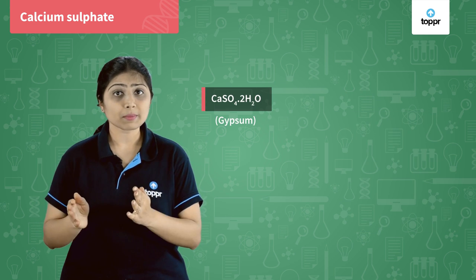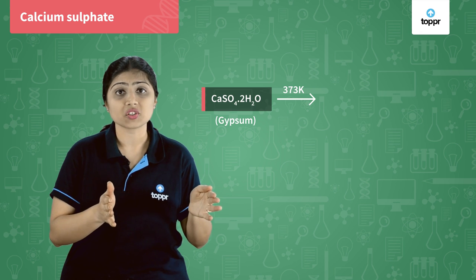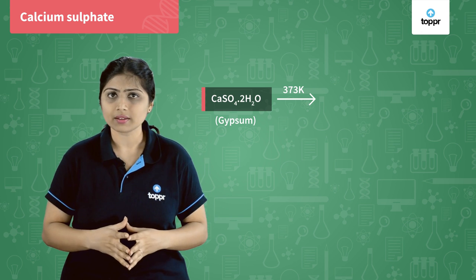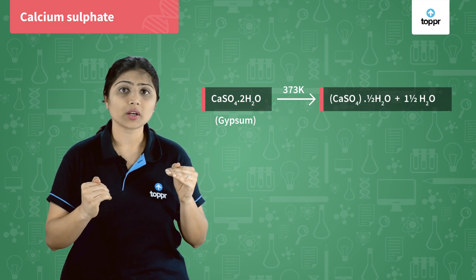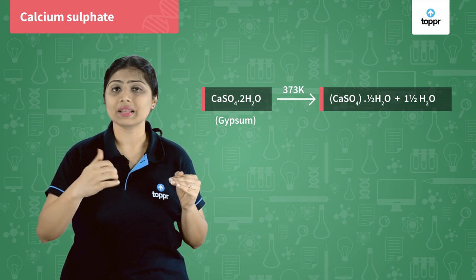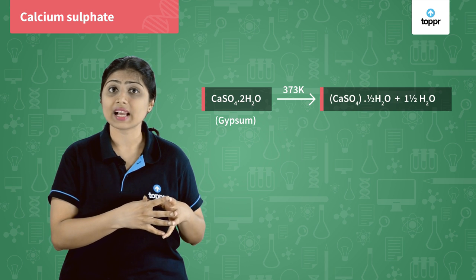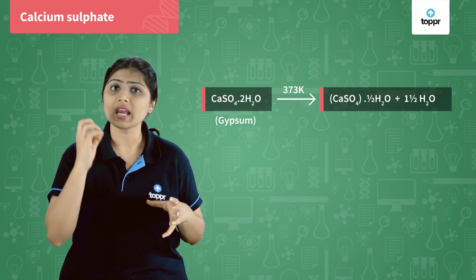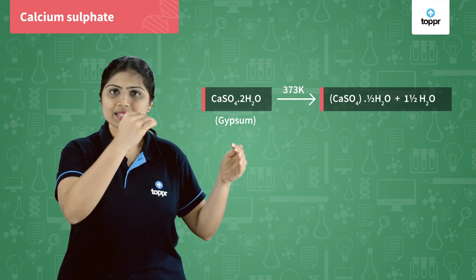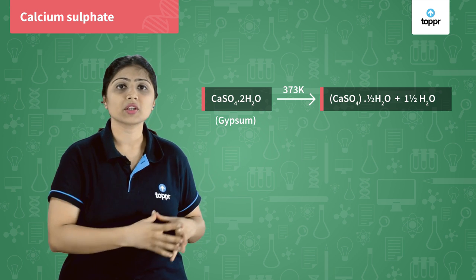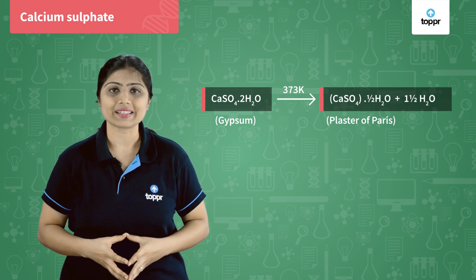When gypsum is heated at 100 degrees Celsius, that is 373 Kelvin, one and a half water molecules from it are evaporated, and what is left behind in calcium sulphate is only half a water molecule. This calcium sulphate·½H2O is known as plaster of Paris.